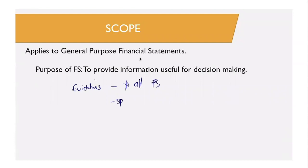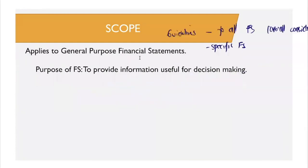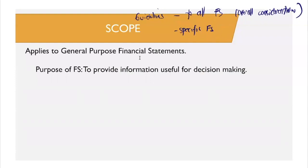We also have guidelines only for specific financial statements. Normally, you know the general guidelines as your overall considerations. For specific financial statements, only those guidelines applicable to that particular financial statement apply. So what is the scope of PAS 1? When we talk about scope, we talk about the applicability of PAS 1 — where does PAS 1 apply?